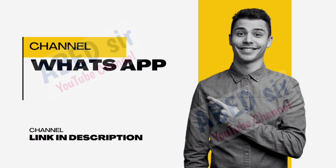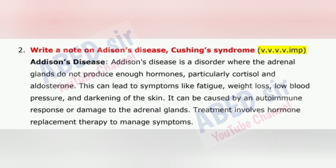Next important question is 2: Write a note on Addison's disease and Cushing's Syndrome. Addison's disease is a disorder where the adrenal glands do not produce enough hormones, particularly cortisol and aldosterone. This can lead to symptoms like fatigue, weight loss, low blood pressure and darkening of the skin. It can be caused by an autoimmune response or damage to the adrenal glands. Treatment involves hormone replacement therapy to manage symptoms.